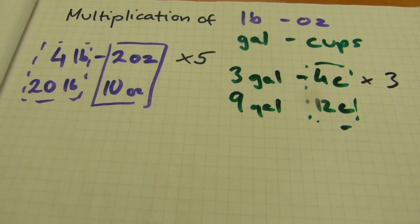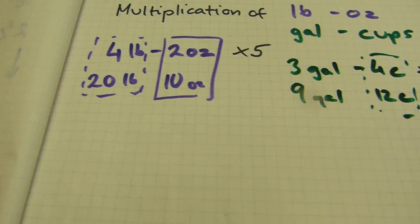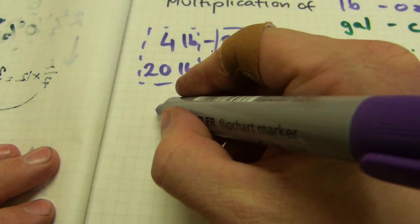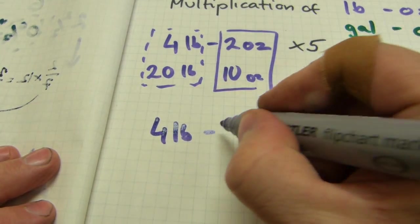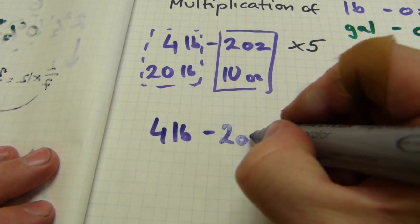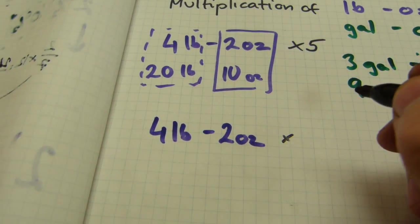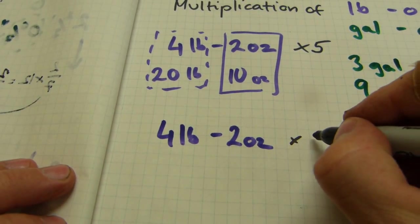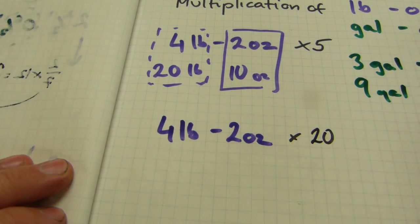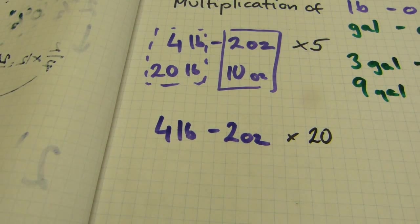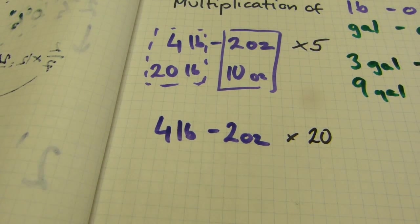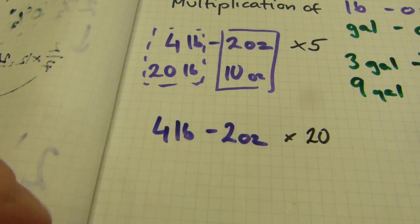Now, let's try another number and carry over. How about the same number? Four pounds, two ounces. And let's multiply it by, I don't know, twenty. Let's do this one. There's going to be carry over here. Two by twenty is forty.